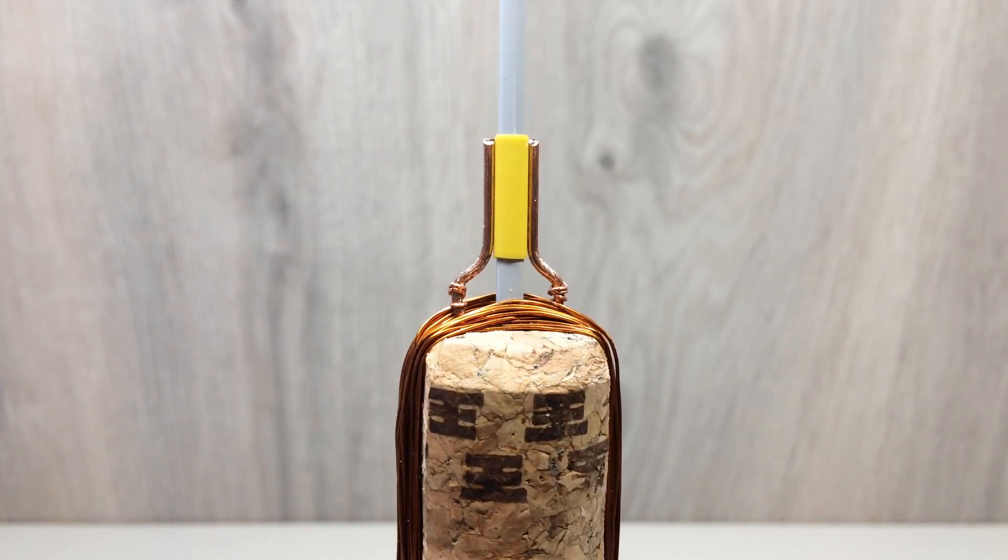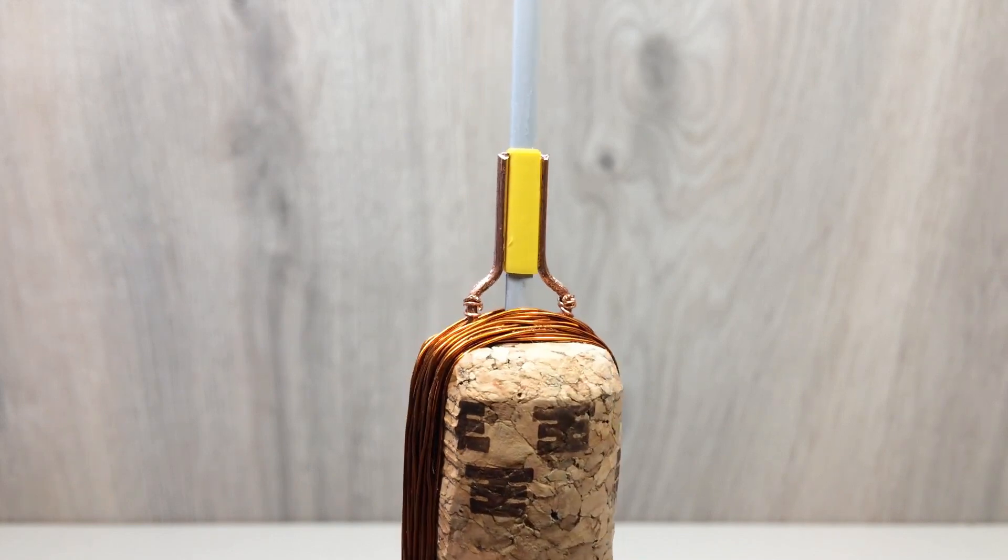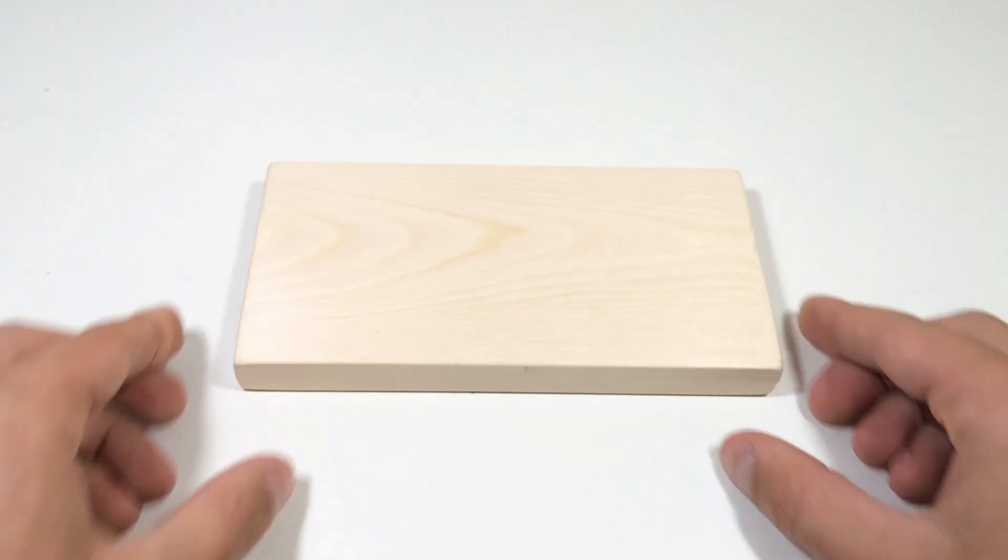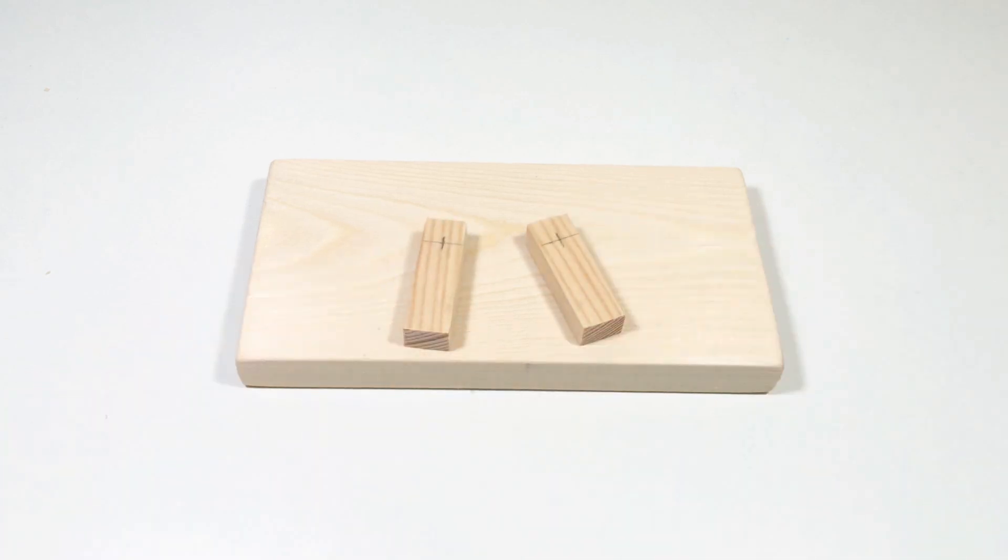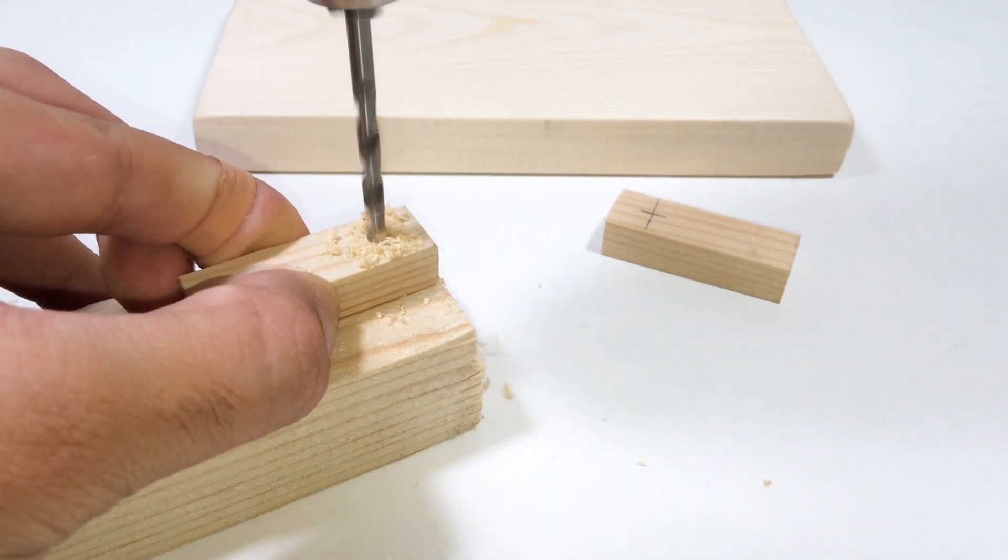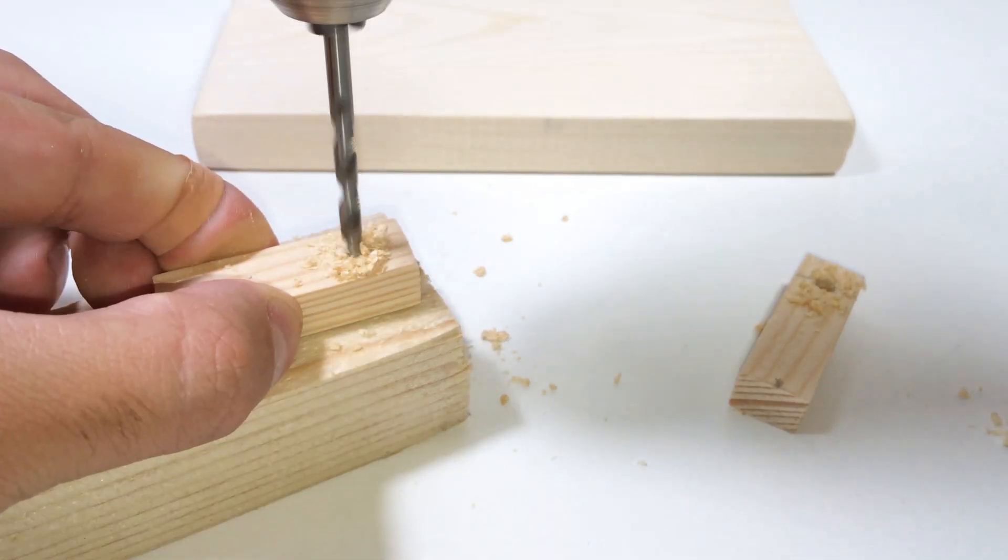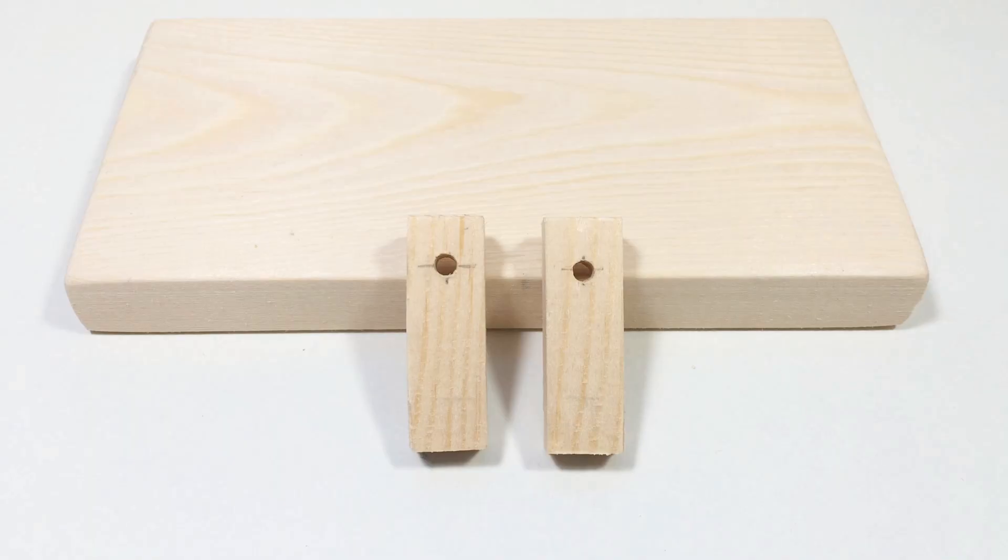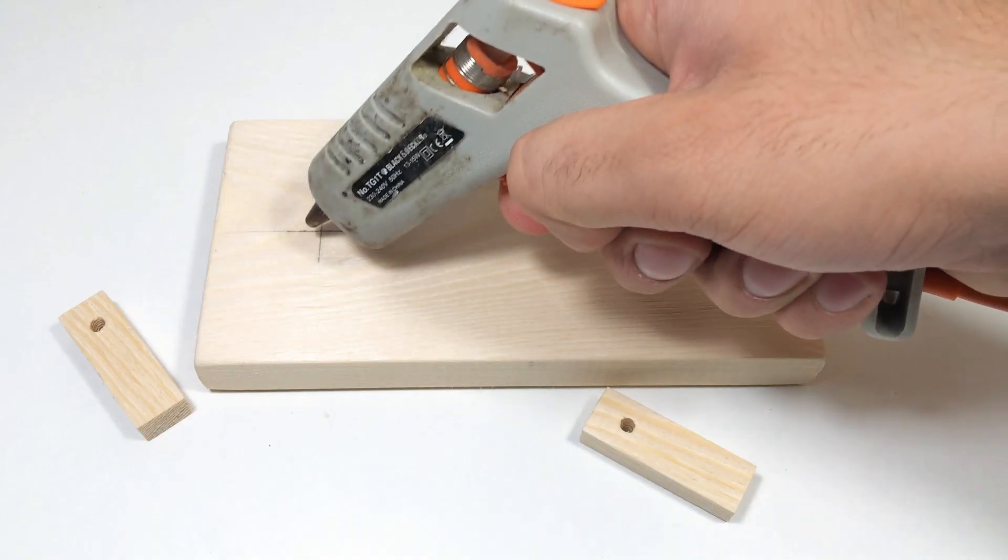Well, the rotor of the engine is ready. Now let's make the engine body. To do this, we need a wooden base and two small bars in which we drill holes. Then we glue the bars on the base and install the engine rotor.